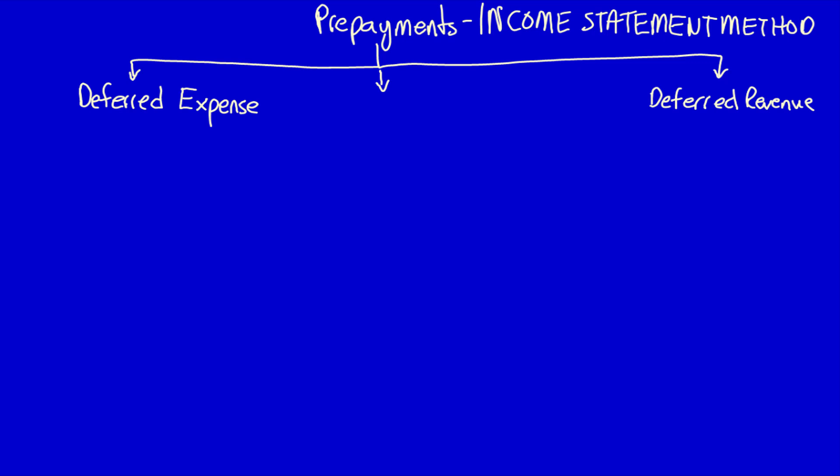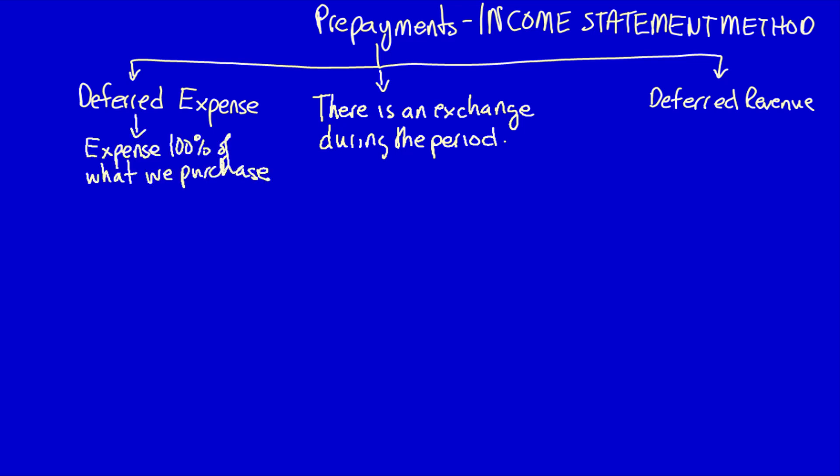There's an exchange between two parties during the period. For the deferred expense we purchase something. Now that item has future economic benefit and you would think that we would record it as an asset — but we don't. This is the income statement method: we expense 100% of what we purchase. Therefore this is a debit to the expense and a credit to either cash or a liability, depending on what kind of prepayment it is.